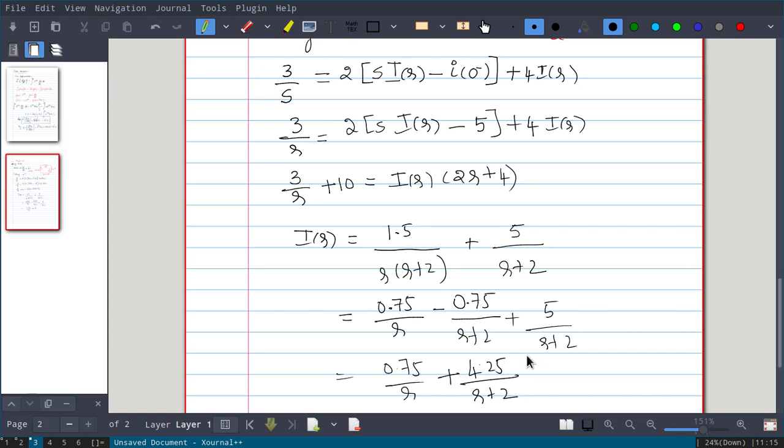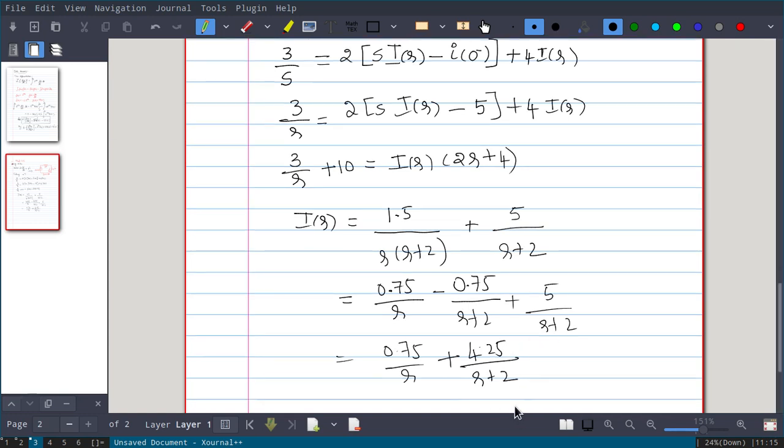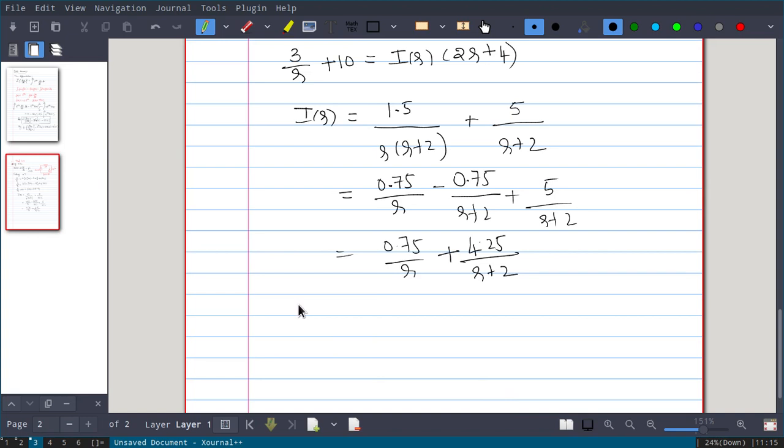If you take now inverse Laplace transform, this i(t) is equal to 0.75u(t) plus 4.25 into e power minus 2t u(t) you will get.